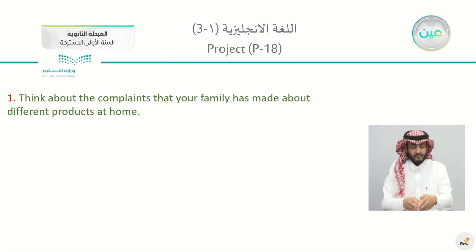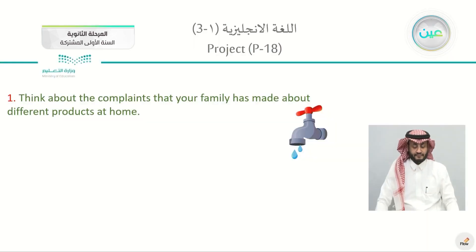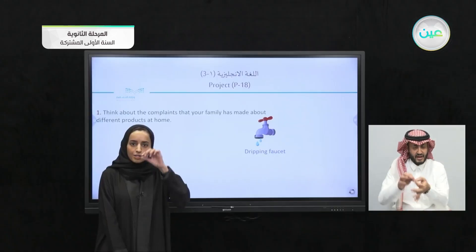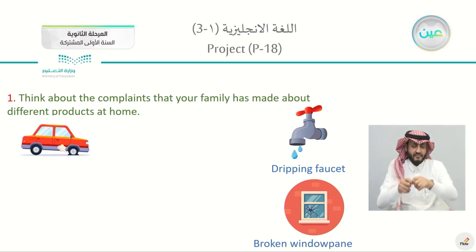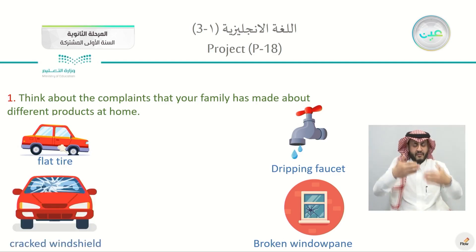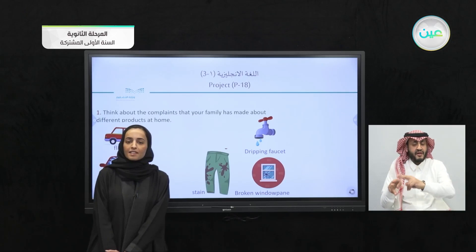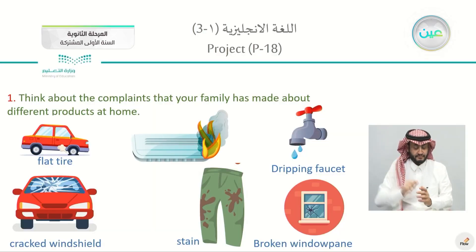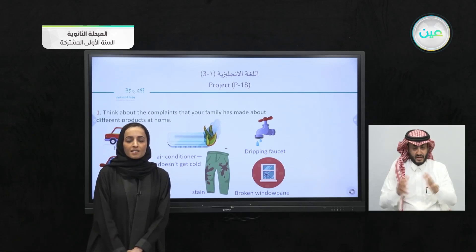For the project in your books, page 18, think about the complaints that your family has made about different products at home. What are the products and what was wrong with them? Examples include a dripping faucet, a broken window pane, a car with a flat tire, a cracked windshield, stained pants, or an air conditioner that doesn't get cold and doesn't work.